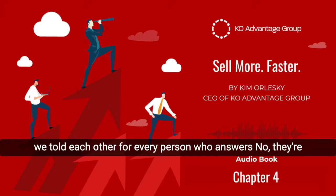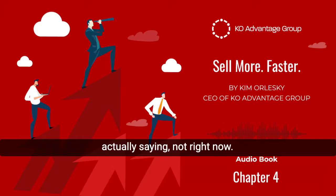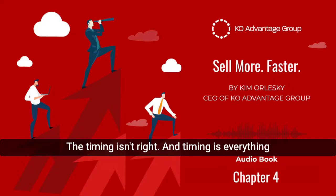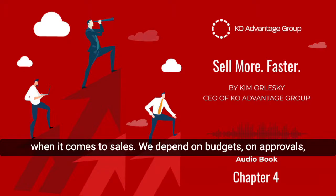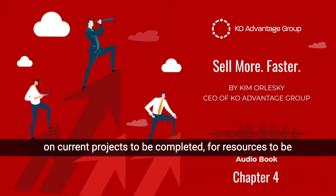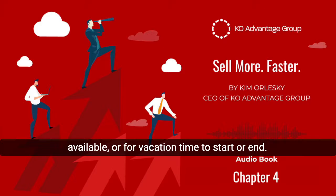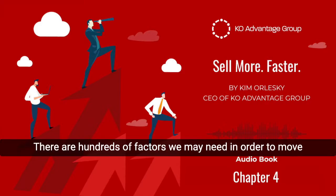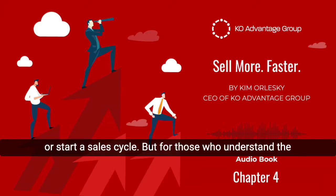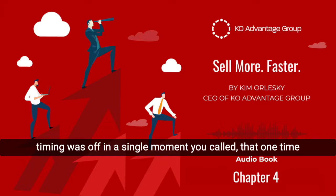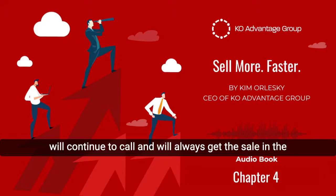In sales, we told each other that for every person who answers no, they're actually saying 'not right now' — the timing isn't right. And timing is everything when it comes to sales. We depend on budgets, on approvals, on current projects to be completed, for resources to be available, or for vacation time to start or end. There are hundreds of factors we may need in order to move or start a sales cycle. But for those who understand the timing was off in the single moment you called that one time, we'll continue to call, and we'll always get the sale in the end.